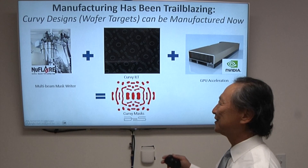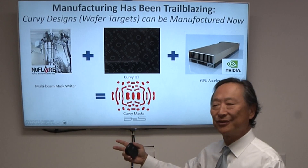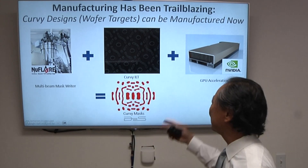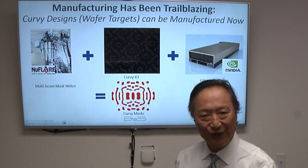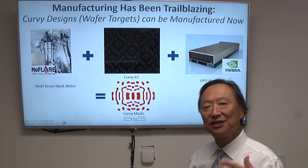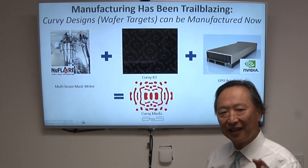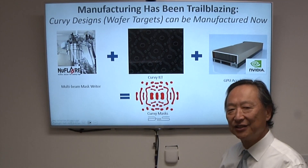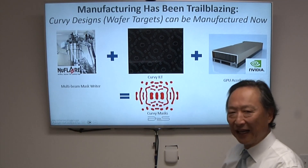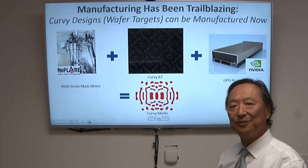Now that curvilinear designs have been enabled with the combination of multi-beam mask writers writing pixels, curvilinear ILT, which produces the curvilinear shapes, and GPU acceleration, which computes in pixels — now we have curvilinear masks everywhere, and this is for the sake of wafer manufacture. But at the same time, this exact thing enables curvilinear designs. Curvilinear ILT not only produces an output of curvilinear mask shapes, but it can also take as input wafer target shapes that are curvilinear.